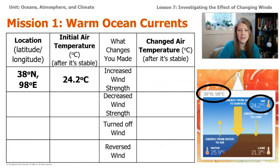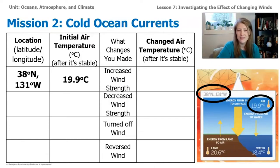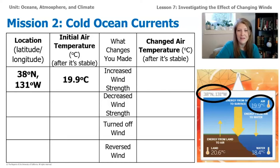One of the things you also need to notice is the title at the top of my data table is for mission one, the warm ocean current. You're also going to need a similar data table for the cold ocean current — just make two of the same. Once you're ready to start, go ahead and go to the sim and start collecting your data, then come back and let's take a look at our data together. If you don't have access to the sim, that's okay — I took some screenshots of what I had at the end of each mission so we can talk about that data together.